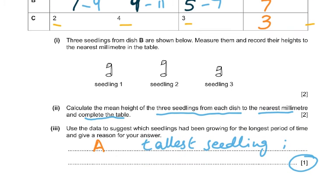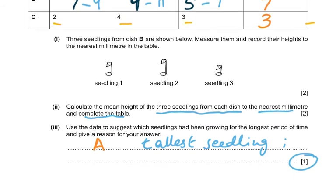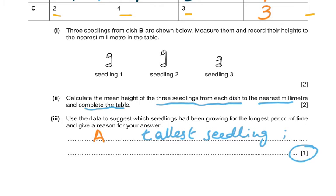Calculate the mean height of the three seedlings from each dish to the nearest millimeter and complete the table. Use the data to suggest which seedlings had been growing for the longest period of time and give a reason for your answer. Because A was the tallest, it was 23 mean height. That is why we think it's been growing for the longest time. That was the only clue you could get - one of them was taller than the others, and that means it had been growing for the longest time.